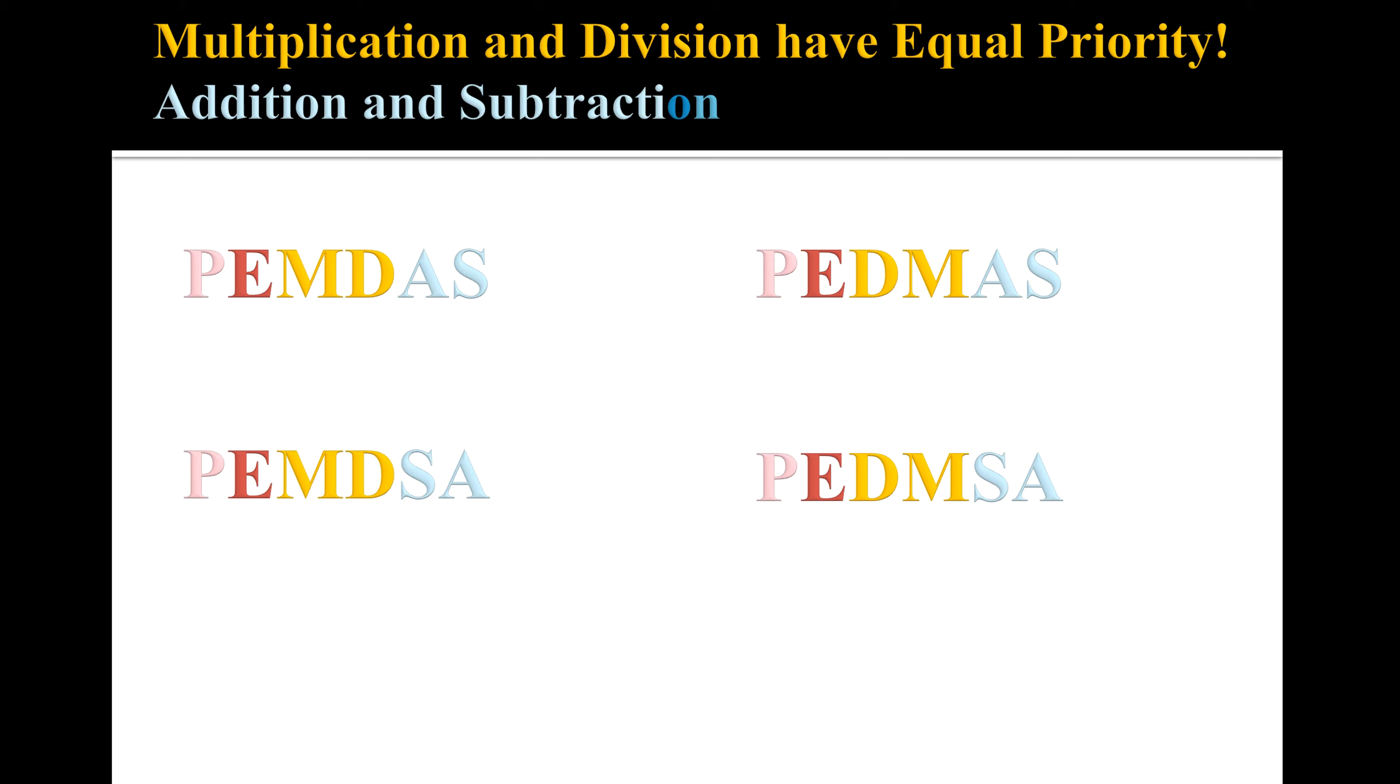So one of the most confusing things about order of operations is we're often taught it as PEMDAS, right? I just had on the previous slide Please Excuse My Dear Aunt Sally. However, that's a little misleading because it implies that multiplication is going to come before division, and that is not always the case because multiplication and division have equal priority. So it could just as easily be PEDMAS, right? You notice that by the color coding I'm trying to signify that multiplication and division are equal.